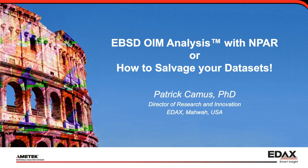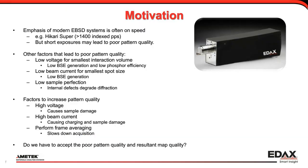The motivation for this webinar is that the emphasis of modern EBSD systems is often on speed. For instance, the specification of our Hikari Super is greater than 1,400 indexed patterns per second. But these short exposures may lead to poor pattern quality in the diffraction patterns. Other factors that can lead to poor pattern quality are low voltage, low beam current, and low sample perfection. Sometimes you have control over these; sometimes you don't. Usually to increase pattern quality, you will want to go to higher voltages, higher beam current, or perform frame averaging — but those are not always amenable.